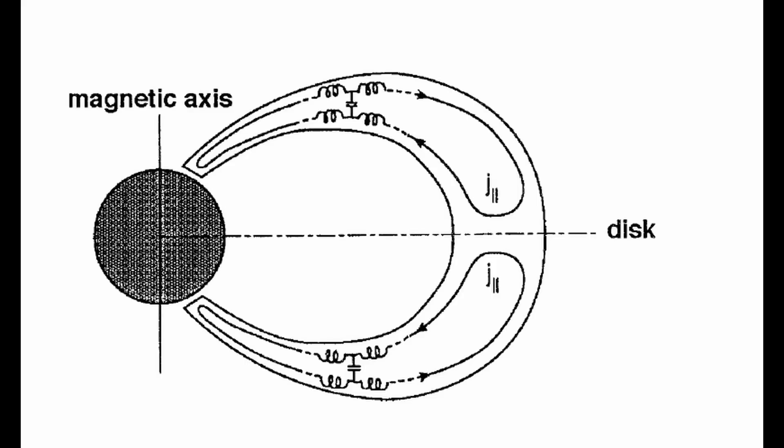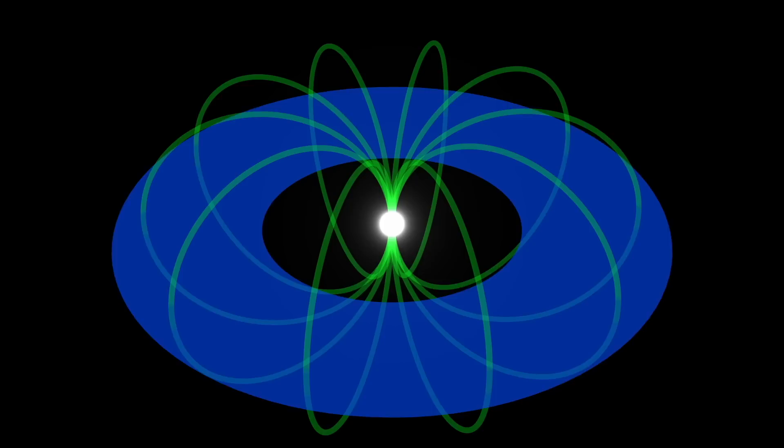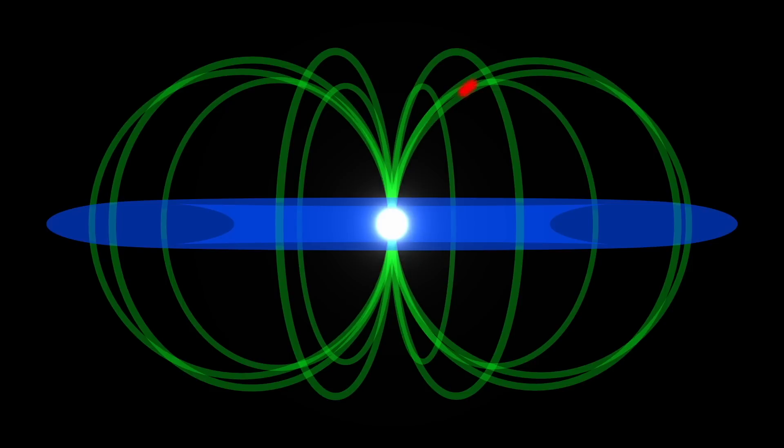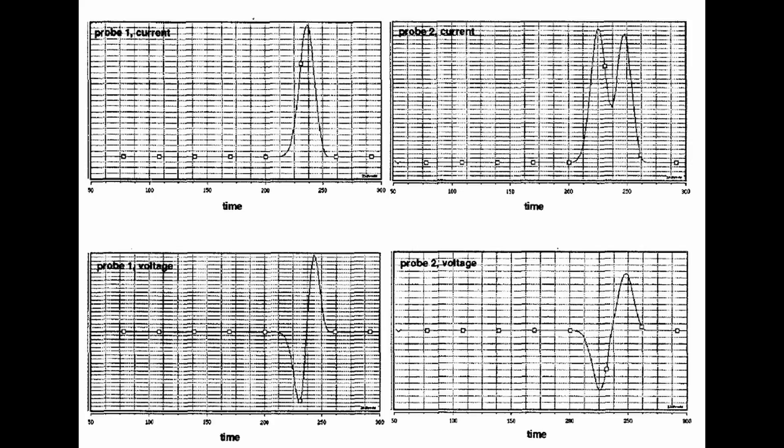The pulsar's magnetospheric transmission line can be modeled by two current conducting boundaries that represent the inward and outward field-aligned currents. The line is terminated by two conductors: the pulsar surface and the disk. A voltage pulse is launched from the pulsar surface. This ends up being reflected back, which changes its polarity. In both simulations and experiments carried out by Peratt and Healy, they saw both single and double pulse profiles.